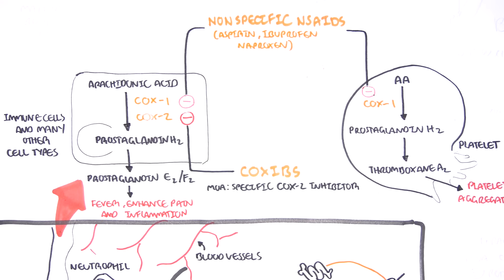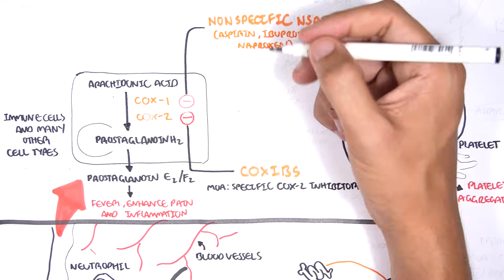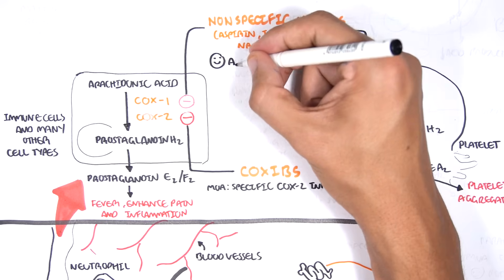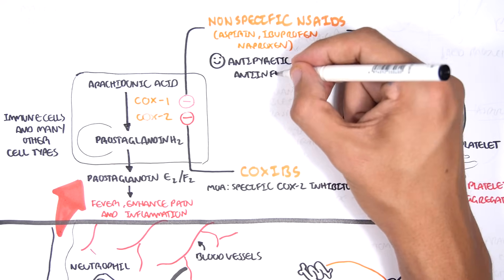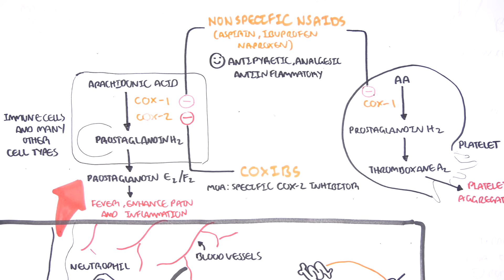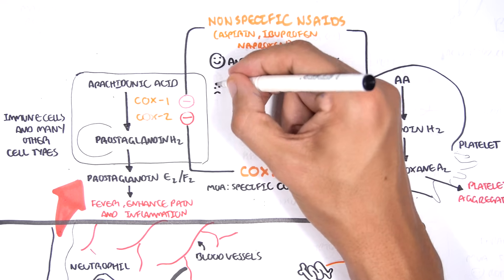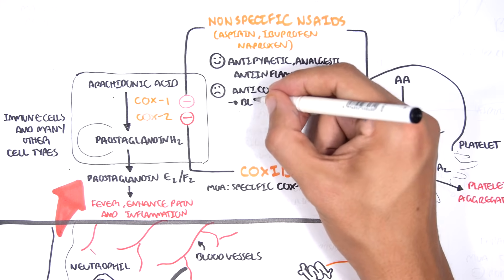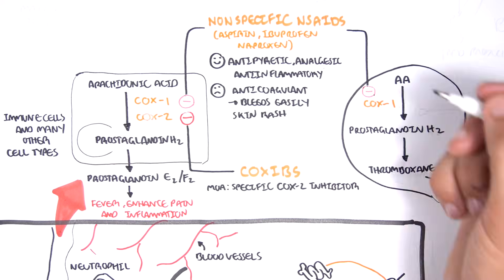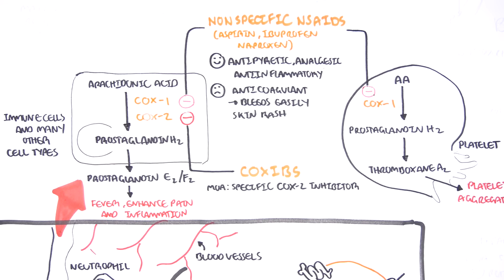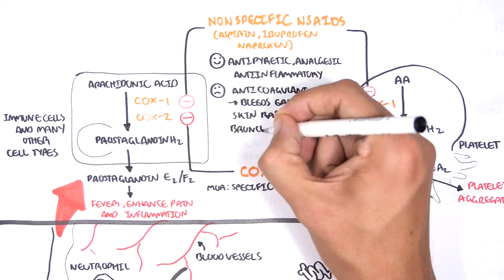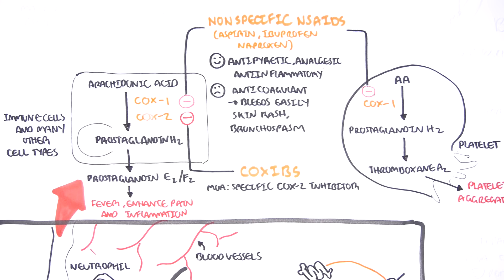Non-steroidal anti-inflammatory drugs, such as your common ibuprofen, are non-selective, and so they block both COX1 and COX2. Thus, they are actually antipyretic, analgesic, and anti-inflammatory. Side effects of these drugs mean that they are anticoagulants, so you can bleed easily. You can also be partially allergic, getting a skin rash, and also NSAIDs can induce bronchospasm, because some prostaglandins have a role in bronchodilation.